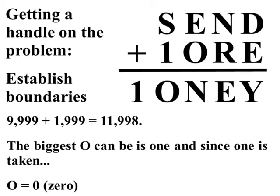The biggest four-digit number as we just mentioned was 9,999. The biggest four-digit number that starts with one is 1,999. If you add those two numbers together you get 11,998. So, the biggest digit O can be is one. But since one is taken, O has to equal zero.